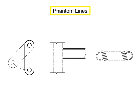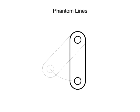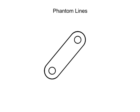Phantom lines are composed of alternating one long and two short dashes, evenly spaced, with a long dash at each end. They are used in three ways. The first is to indicate the alternate position of moving parts.